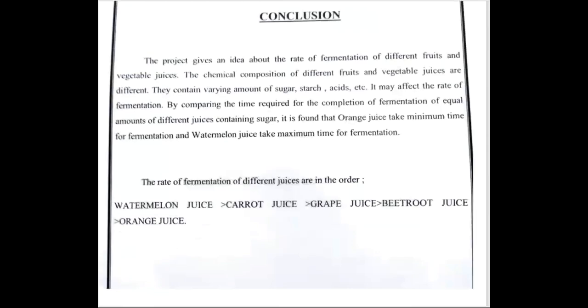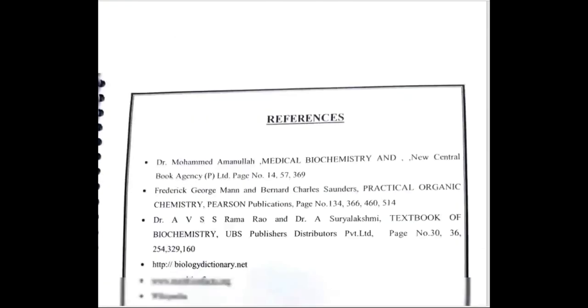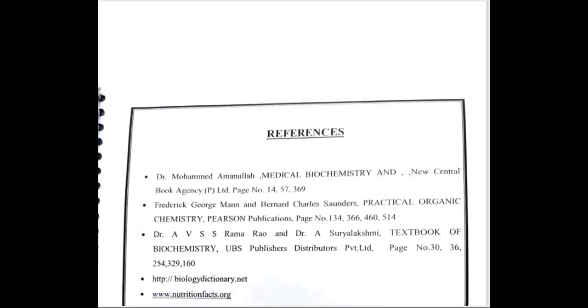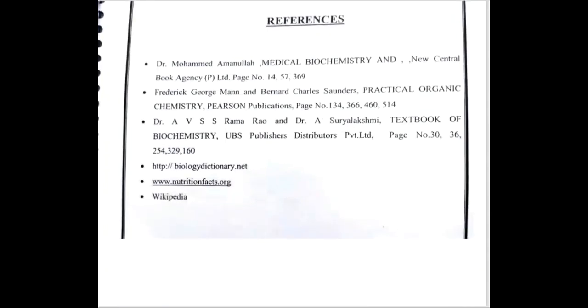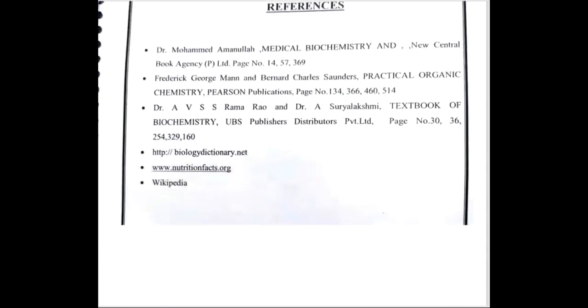The rate of fermentation of different juices is in the order: watermelon greater than carrot, then grape, then beetroot, then orange. Then write the conclusion and reference. Conclusion is here, and reference. Thank you.